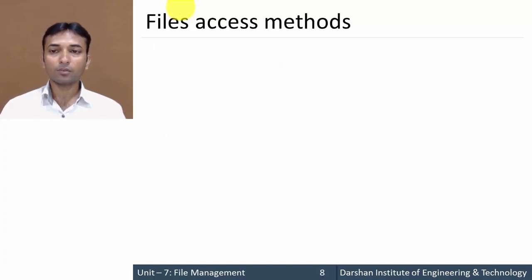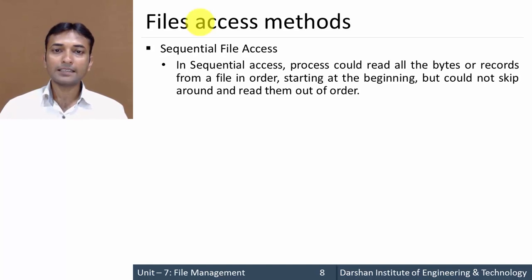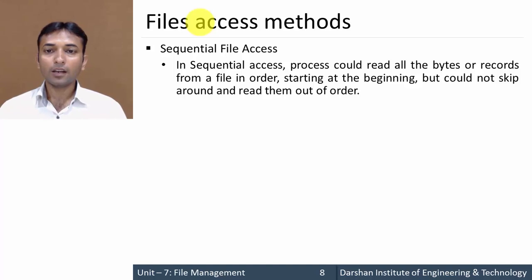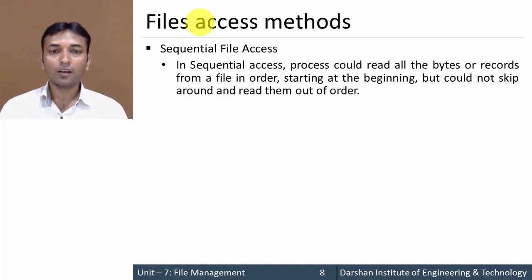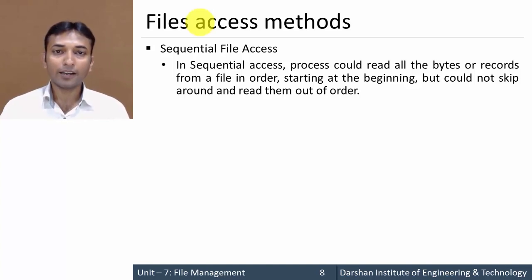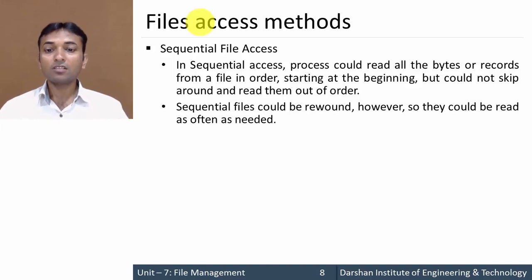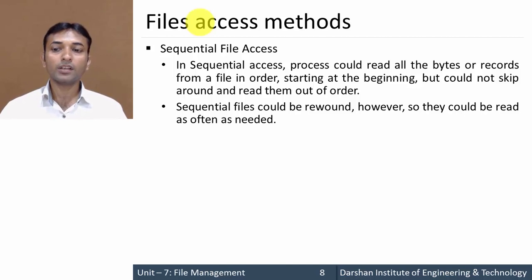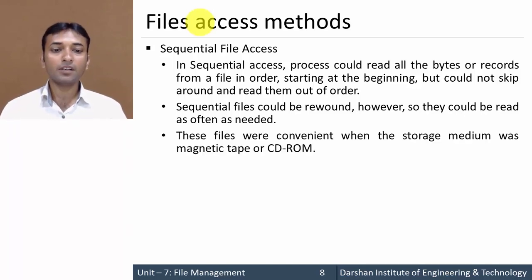Next, let us look at different file access methods. The first one is sequential file access. The name itself indicates that data can be accessed sequentially from the beginning to the end — you cannot skip content or directly access data randomly. Sequential files could be rewound and read as often as needed. These files are convenient when the storage medium is magnetic tape or CD-ROM.